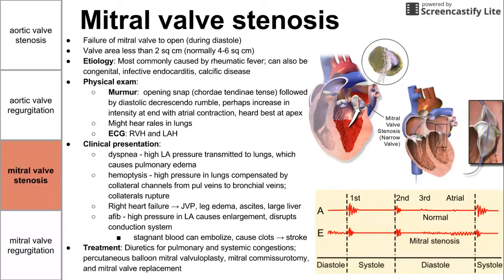Treatment for mitral valve stenosis is diuretics for pulmonary and systemic congestion to relieve symptoms. We can also do percutaneous balloon mitral valvuloplasty — putting a balloon in to break open the valve, as shown in the picture. You can also replace the valve or do a commissurotomy, which involves breaking the connections between the mitral valve leaflets that are preventing it from opening.